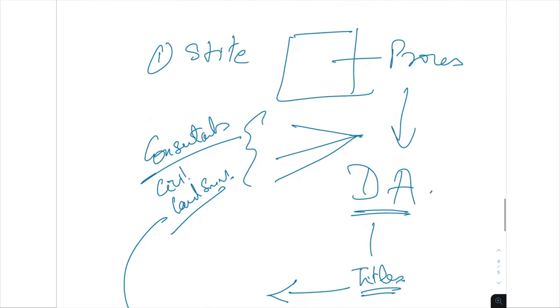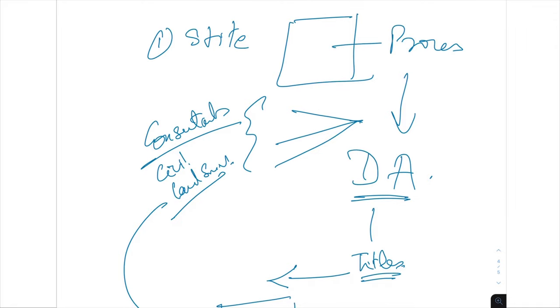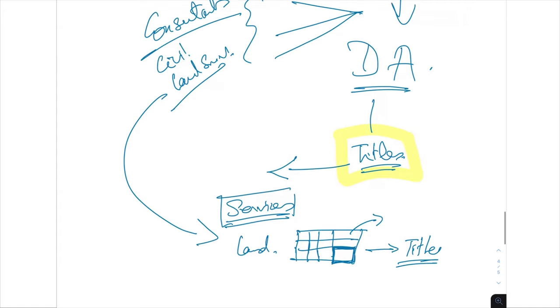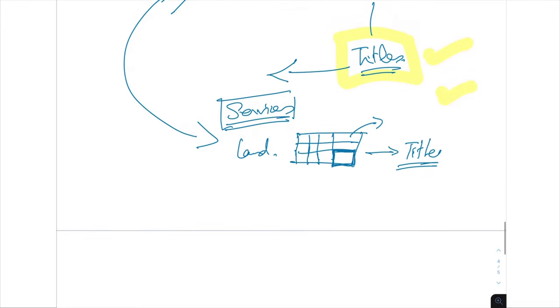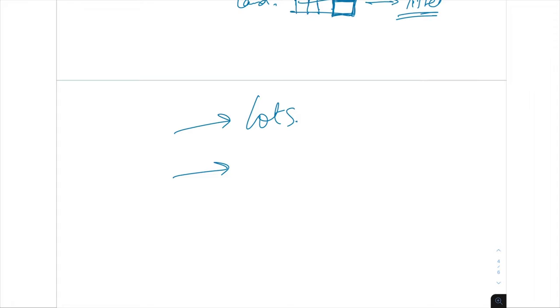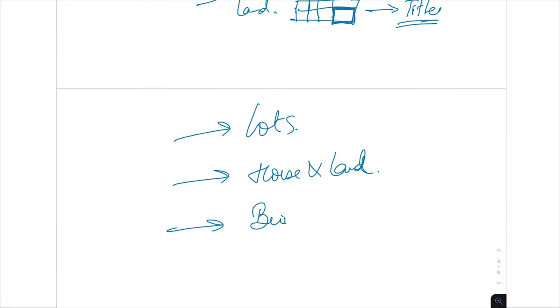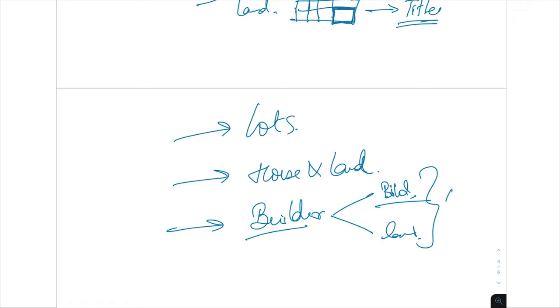Once you've got all those things done, you can get your titles and sell those lots. You can sell just the lots, or you can do a house and land package with a builder who does the build for you, combining the land and build together in a contract of sale.